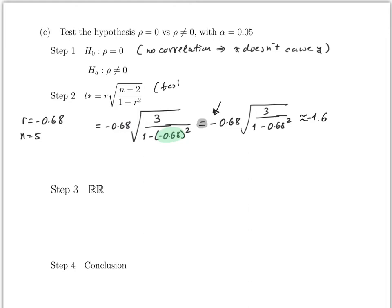That is the test statistic t* = −1.6. For step three, since the alternative is ρ ≠ 0, this is a two-tailed test. The rejection region is ±t(α/2) with degrees of freedom n − 2 (note: n minus 2, not n minus 1 as in chapter 8).